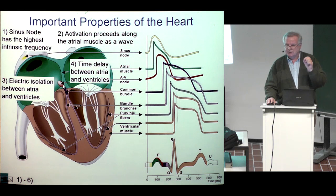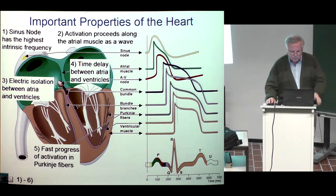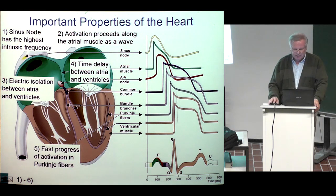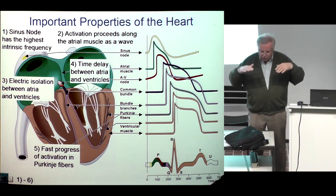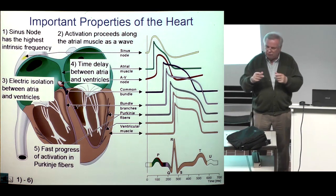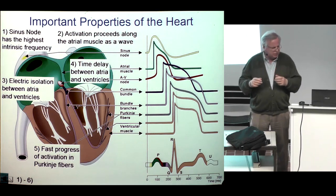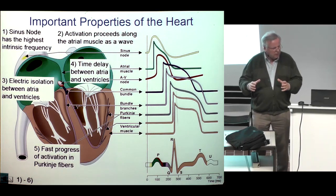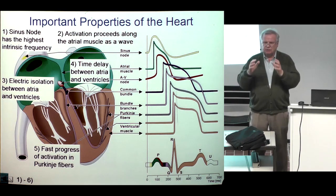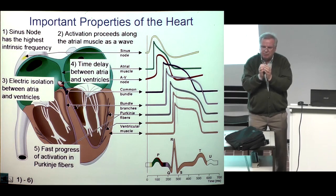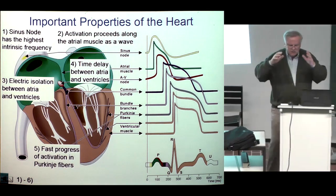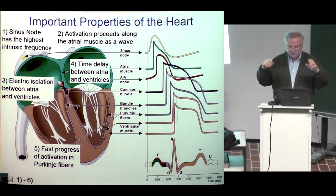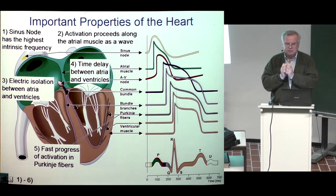Isn't that smart? Then there is fast progress of activation in Purkinje fibers. Why is that important? If the ventricles contracted slowly and partially, the net volume change would not be much. But if practically all parts of the ventricles contract at the same time, the pumping is most effective. This is due to the fast progress of activation in the Purkinje fibers — very smart.